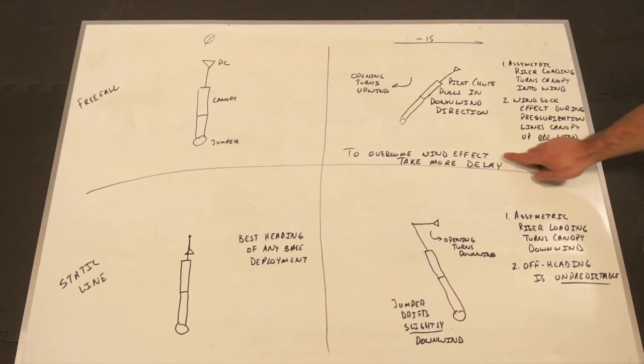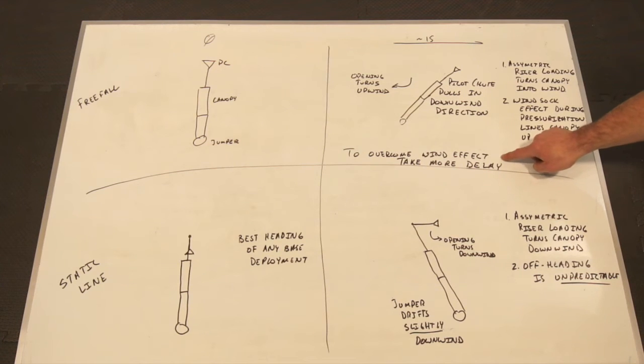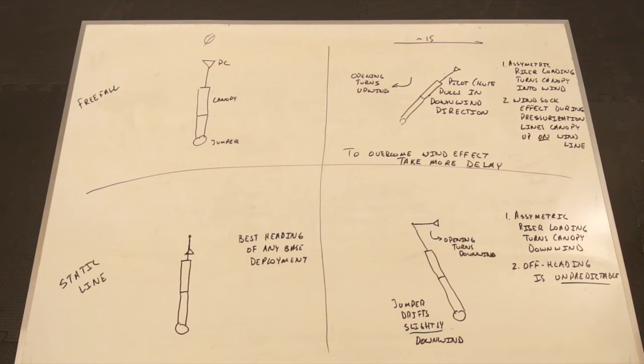Two really important things here. The first one is, if you want to overcome this effect, your most effective strategy is to take more delay. In general, the longer delay you can take in windy conditions, the better your opening heading is going to be. The second thing that's important here is that this effect is actually quite predictable. We'll see loads with five jumpers all getting identical off-heading openings because of a sufficiently strong crosswind. The thing about a predictable off-heading opening is we can plan for it, which means that this is actually not a very dangerous condition as long as we've done our homework and we know what's going to happen next.